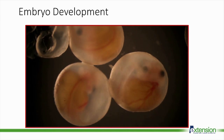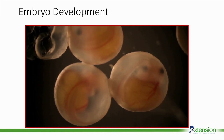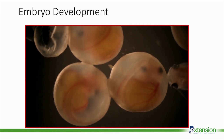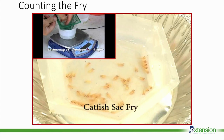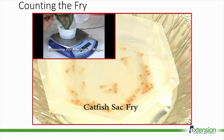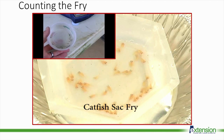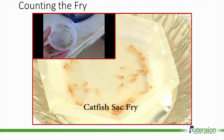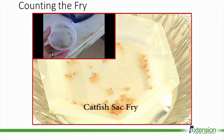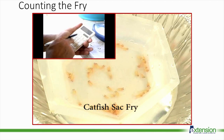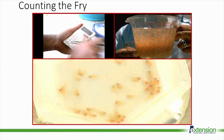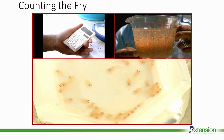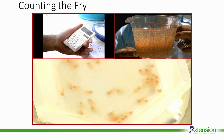When the eggs hatch, they have a large yolk sac attached that they can feed on for several days. Farmers need to know how many fry they have so they can accurately stock them into the ponds. Several samples of the fry are counted by weight, and using the sample data, the rest of the fry are counted either using volumetric displacement or by weight.